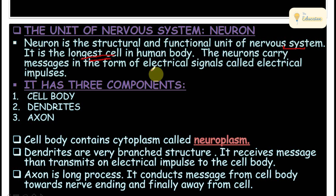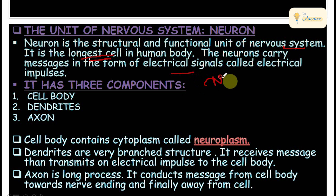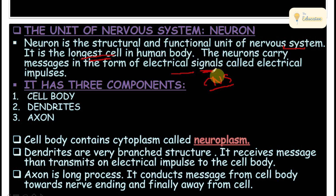One more very important point: what do neurons do? They carry messages in the form of electrical impulses to the central nervous system (CNS). So neuron is the structural and functional unit of the nervous system, it is the longest cell in the human body, and neurons carry messages in the form of electrical signals called electrical impulses.